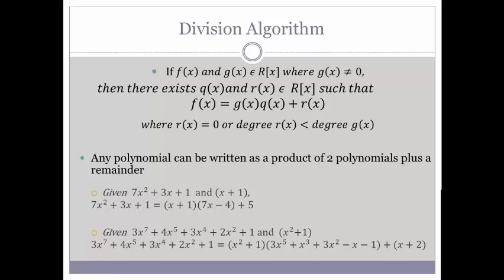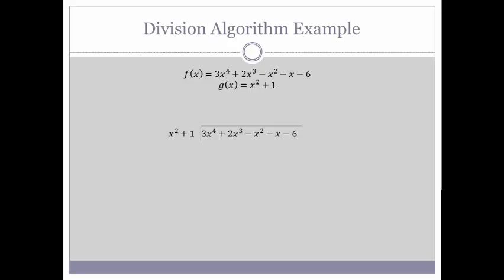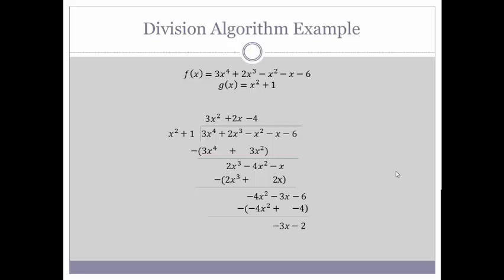You might be wondering where on earth we found these Q of X and R of X values — and that's where this is going to look familiar. This is going to remind you of long division. So we start with F of X equaling 3X to the 4th plus 2X cubed minus X squared minus X minus 6, and G of X being X squared plus 1. We divide it out: we put our 3X squared up top, multiply that out and subtract it off, ending up with 2X cubed minus 4X squared minus X. Then add our 2X, multiply by X squared plus 1, subtract that off, ending up with negative 4X squared minus 3X minus 6. Lastly subtract off our negative 4, multiply that out, and end up with negative 3X minus 2.